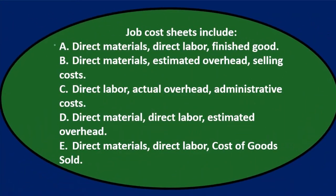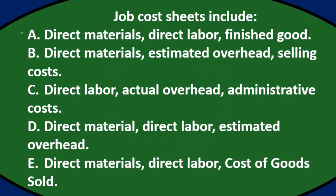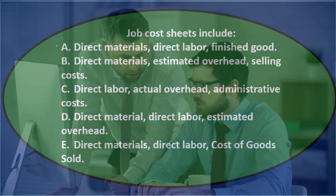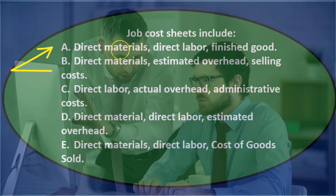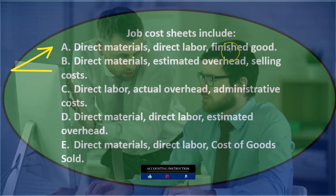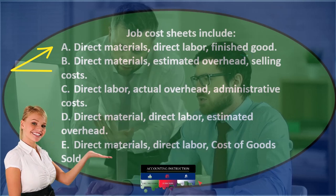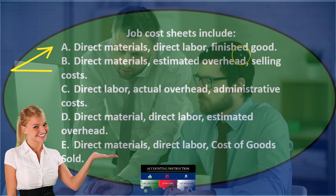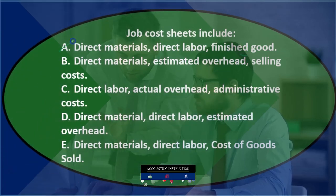Those three things are going to be direct materials, direct labor, and overhead. The first choice says direct materials, direct labor, and finished goods. Finished goods doesn't seem right — once the job is complete, it becomes finished goods, but that's not what's on the job sheet. We're missing overhead on that one, so I don't think that's going to be it.